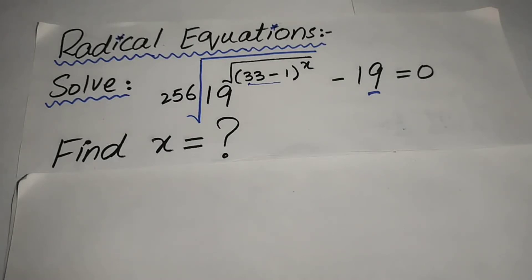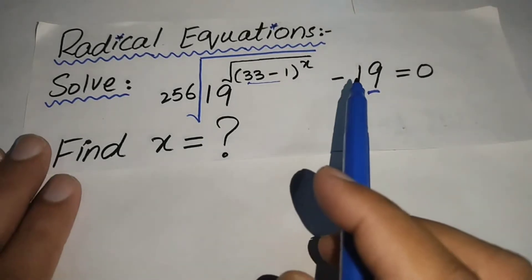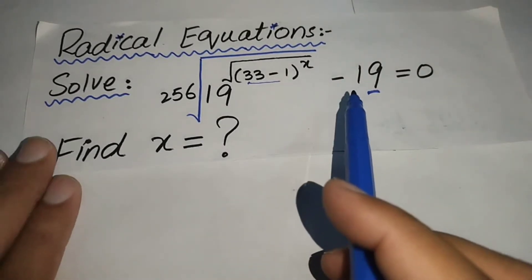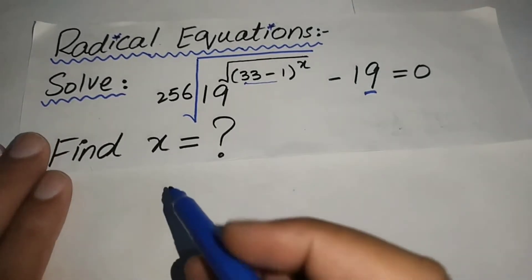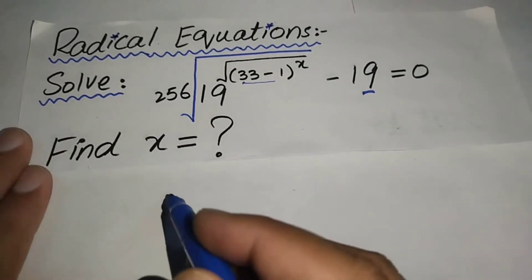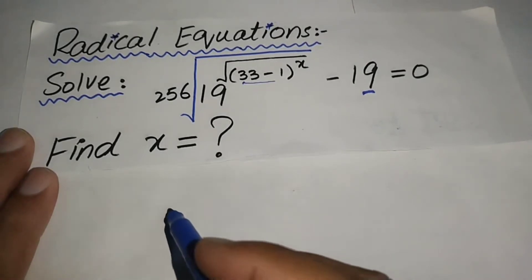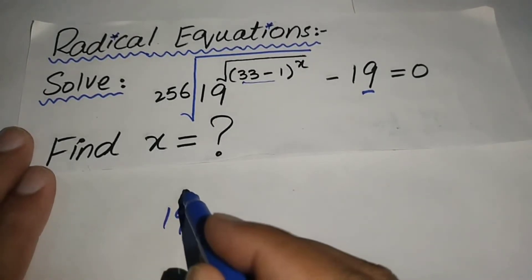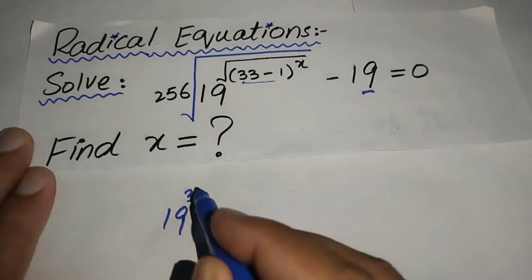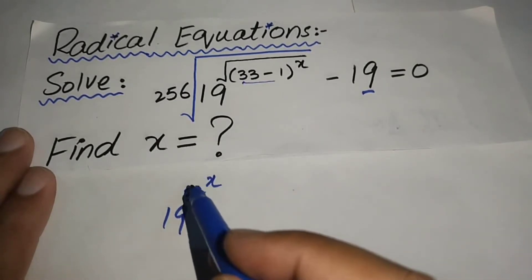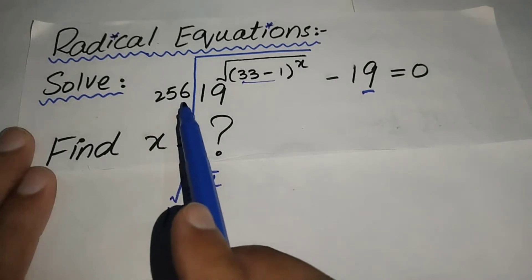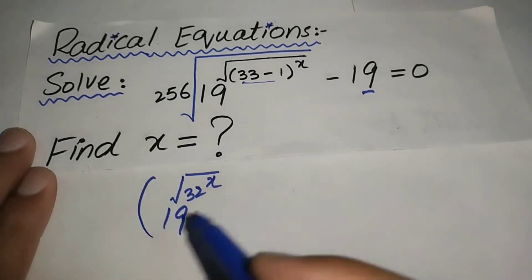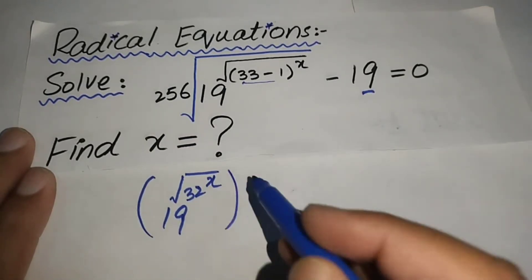In the question statement, first we take 19 to the right hand side and do some simplification. Here you can see that this is 19 to the power of 32 to the power x, under a square root, and we write 256 as 1 over 256.